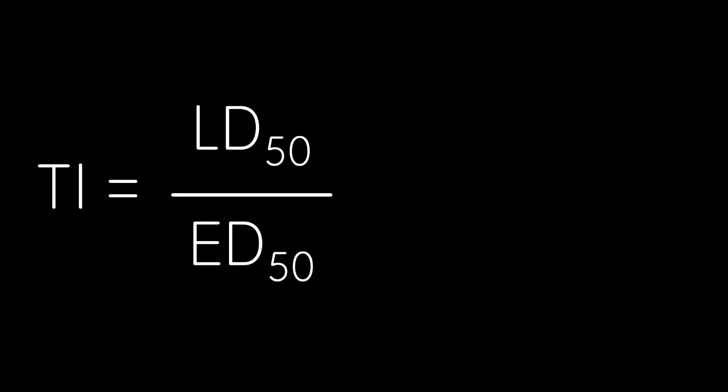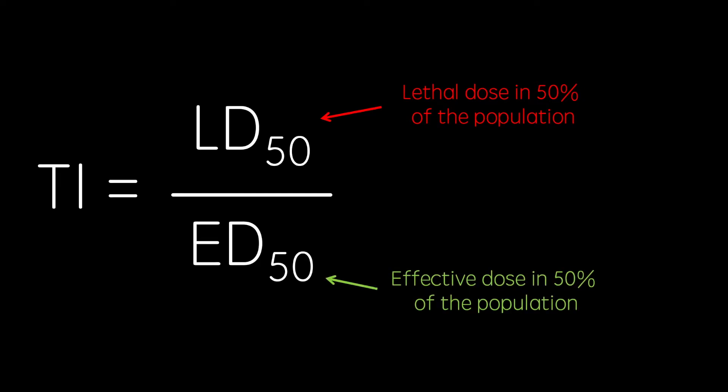Therapeutic index used to be calculated by dividing the dose that killed 50% of the test population (LD50) over the dose that produced the desired therapeutic effect in 50% of the population (ED50).